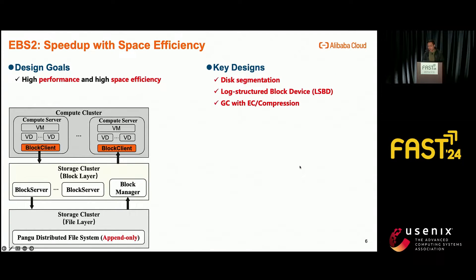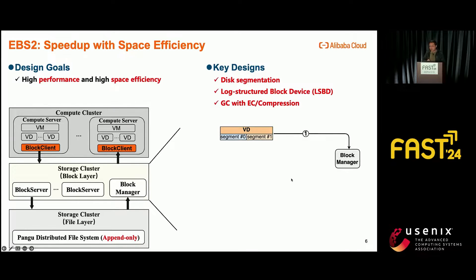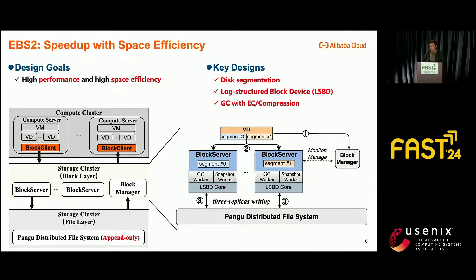In EBS2, our goal is to improve performance by using advanced hardware like SSDs, while not wasting too much space. The first architectural change is to use an independent file layer service — namely our distributed file system, Pangu. To match the characteristics of SSDs, Pangu is an append-only file system. We also adapted the block servers: first, we used disk segmentation instead of partitioning virtual disks into chunks for better load balancing. Second, we embedded a log-structured block device — called LSBD for short — in each block server to convert incoming I/O to append-only writes, as we are now using Pangu as our backend.